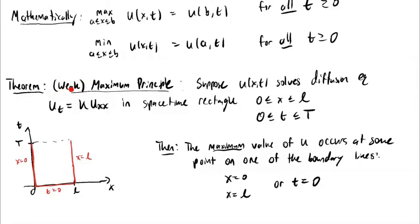Why is this the weak maximum principle? There's a version called the strong maximum principle which says the maximum cannot occur in the interior — it's only on one of these three lines. The weak version only says that there's some point on one of these three lines where the largest value occurs; it doesn't preclude a point in the interior where the maximum also occurs. We're going to focus on the weak maximum principle for now.